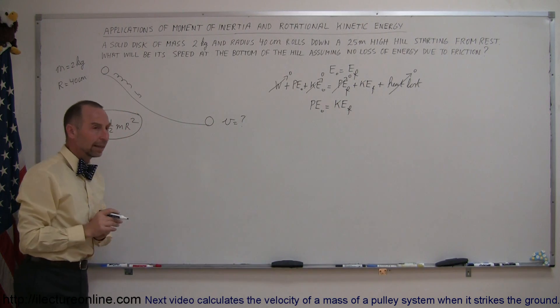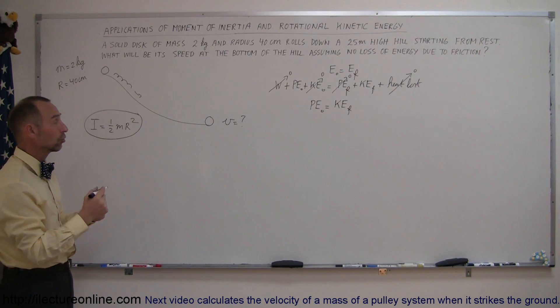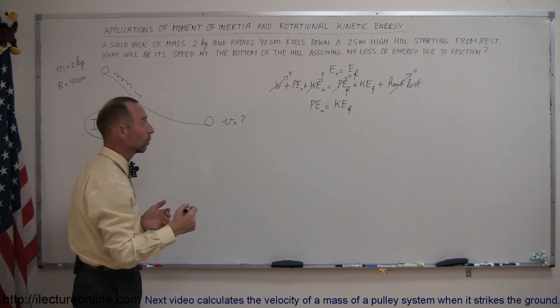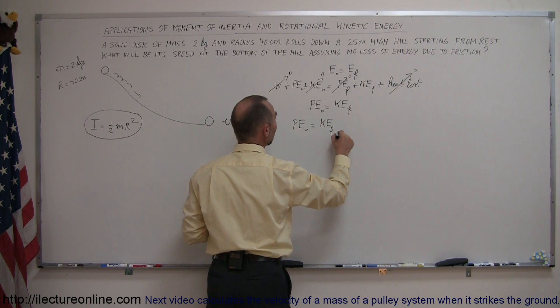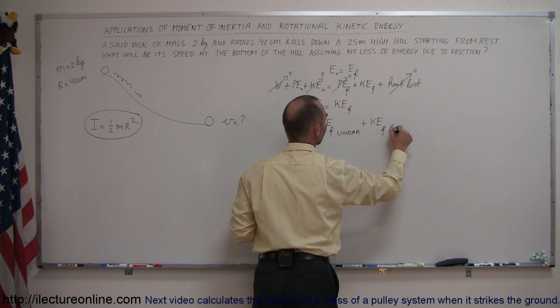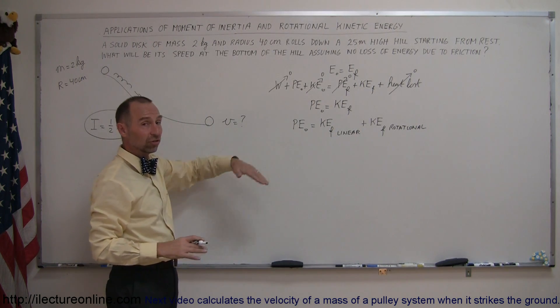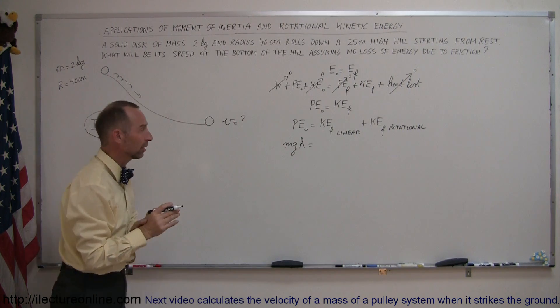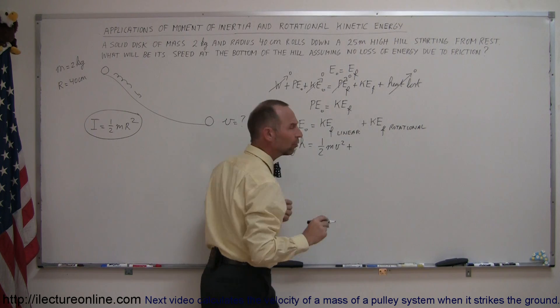But here comes the difference. Kinetic energy can come in various ways. It can come in linear translational motion and it can also come from rotational motion. In this case, the disk will have translational or linear motion and it will also have rotational motion. So we can now write this equation as potential energy initial will be equal to kinetic energy final linear plus kinetic energy final rotational. So potential energy initial is simply mgh, the mass times acceleration of gravity times the height. Linear kinetic energy is known as one-half mv squared.